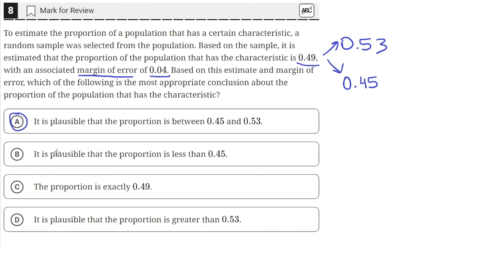The rest of the answer choices are outside of the plausible range, like answer choice B and answer choice D. Answer choice C says the proportion is exactly 0.49, but this doesn't take into account the margin of error.